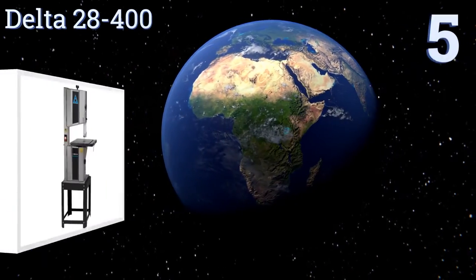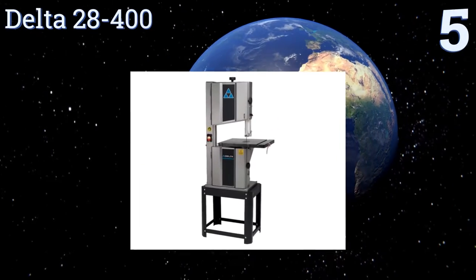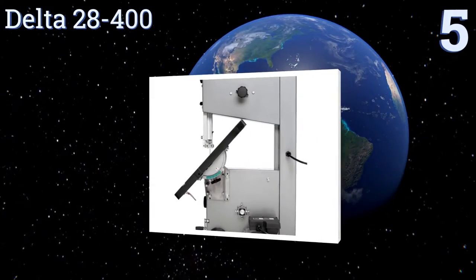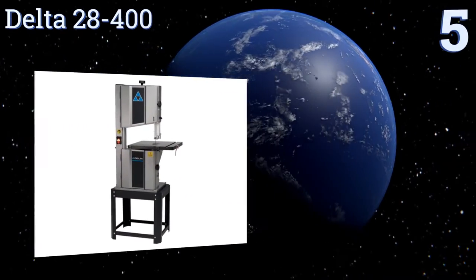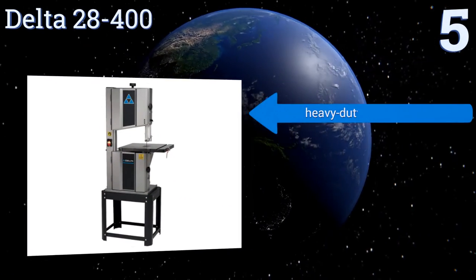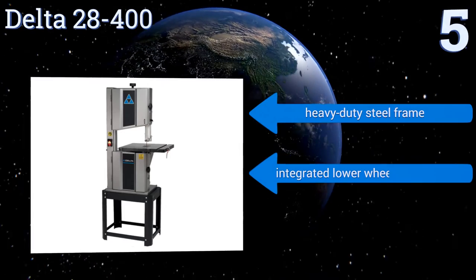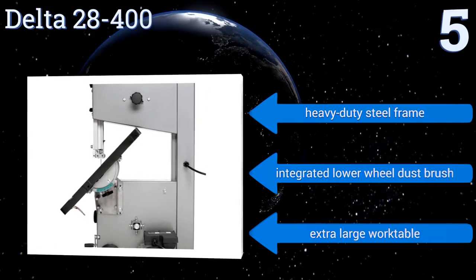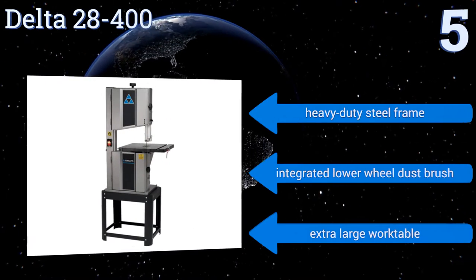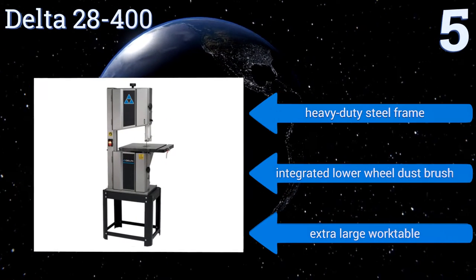Halfway up our list at number 5, the Delta 28-400 has an aluminum trunnion table support and 9-spoke precision-balanced wheels for superior blade tracking and durability. It uses a standard 93.5-inch blade that can be adjusted with the easy-to-use tensioning system. It features a heavy-duty steel frame, an integrated lower-wheel dust brush, and an extra-large work table.